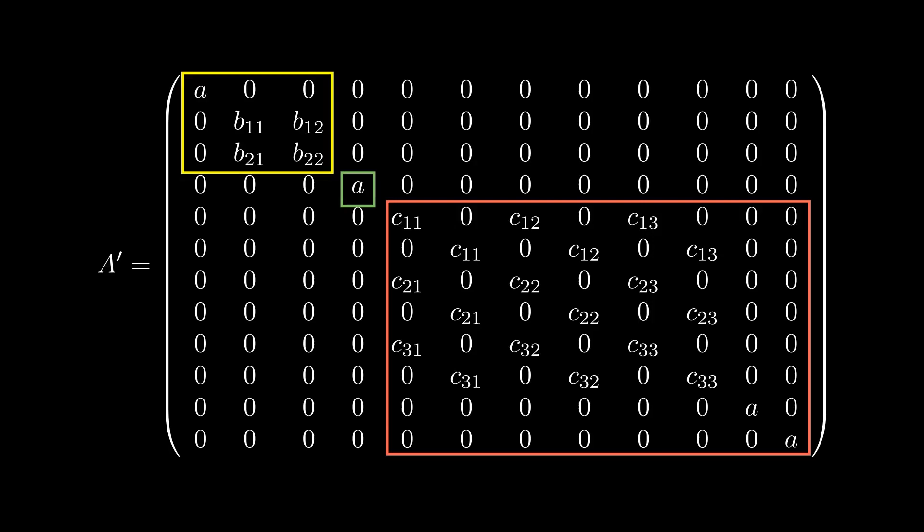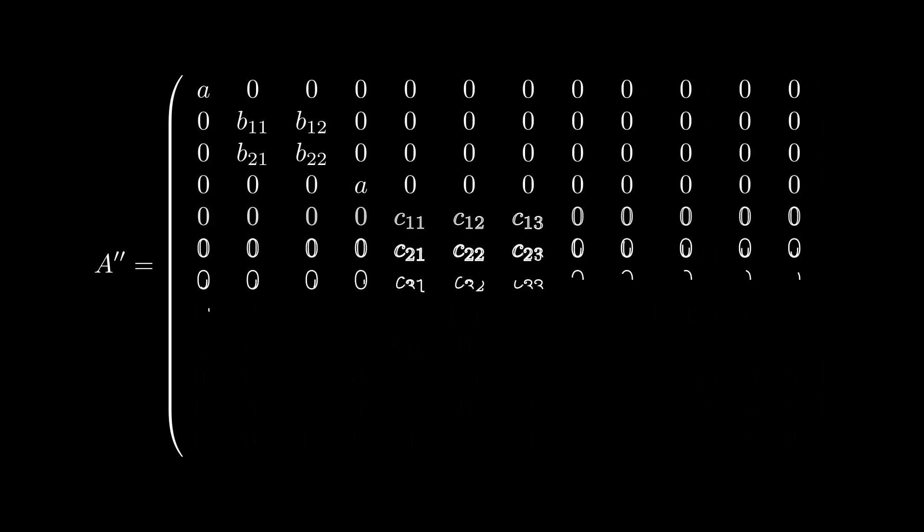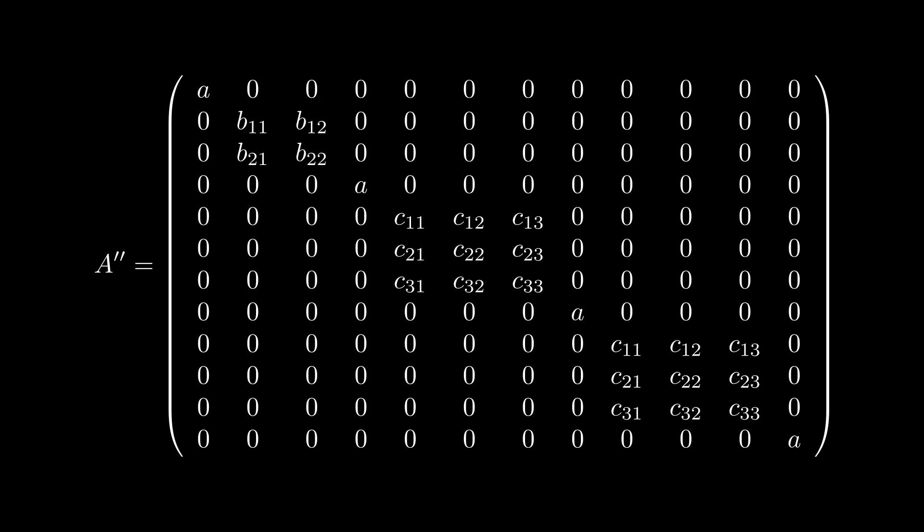To really diagonalize the matrix, we make a final step, which is to change the order of our vectors. With a well-chosen change of the basis vector's positions, the new matrix A' becomes block diagonal, with small 1D, 2D, and 3D blocks.